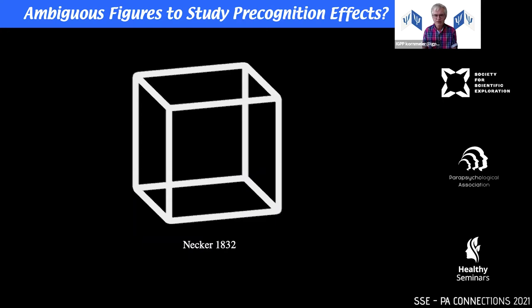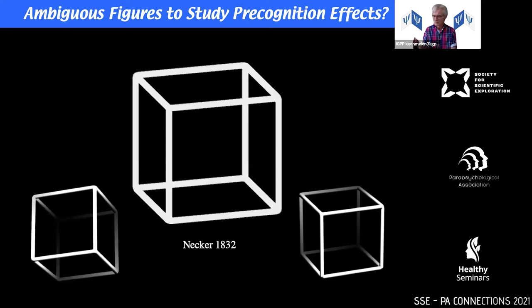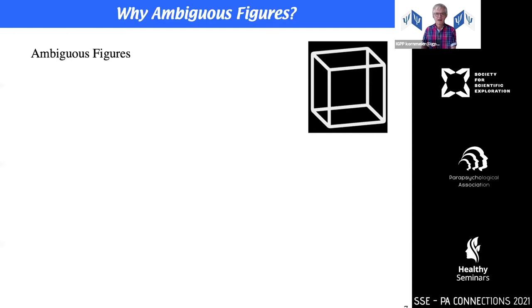We will use ambiguous figures — more specifically the famous Necker cube — in order to study this. Most of you may see it in one orientation, others in another. The interesting bit is that while you observe the Necker cube, your perception changes every now and then between orientations, even though the sensory information stays unchanged over time.